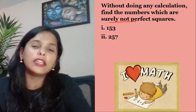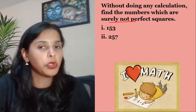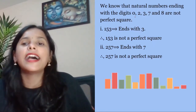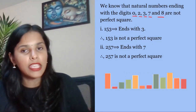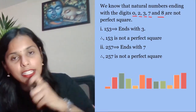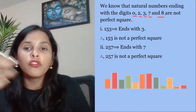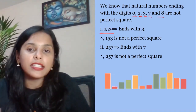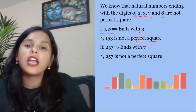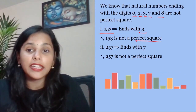Without doing any calculation, find the numbers which are surely not perfect squares. We know numbers ending with 0, 2, 3, 7, or 8 are not perfect squares. 153 ends with 3 — definitely not a perfect square. 257 ends with 7 — also not a perfect square.